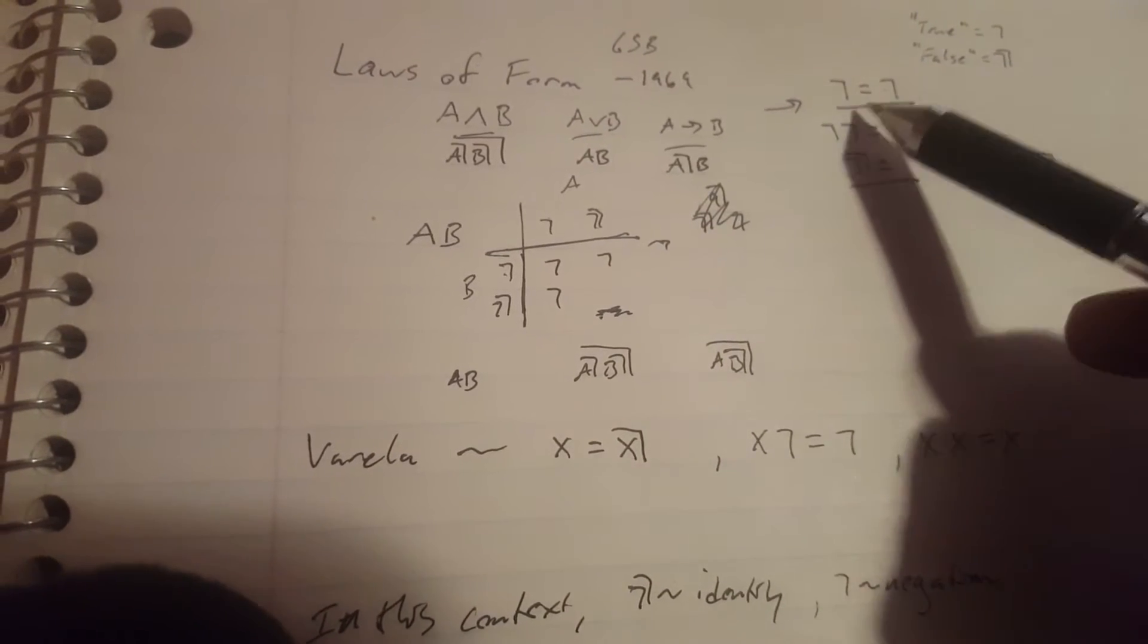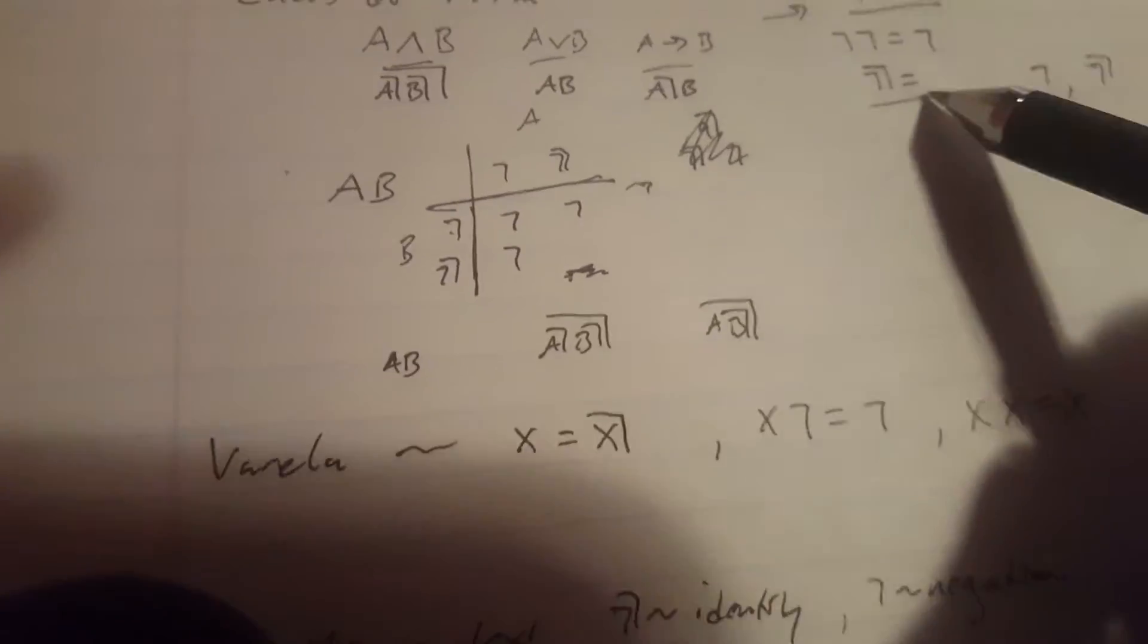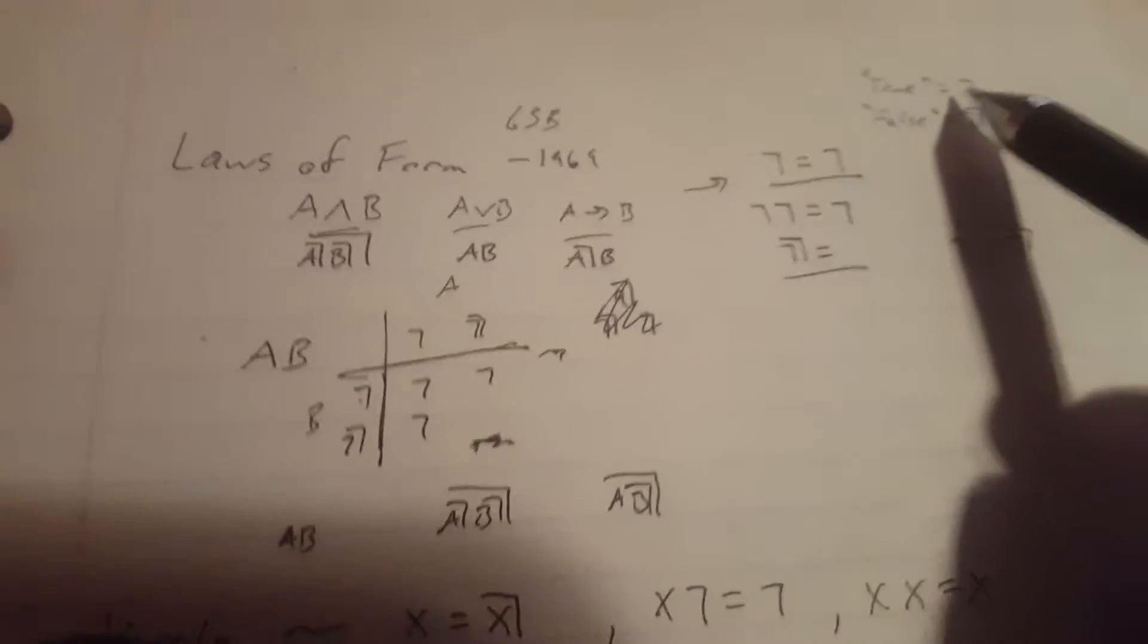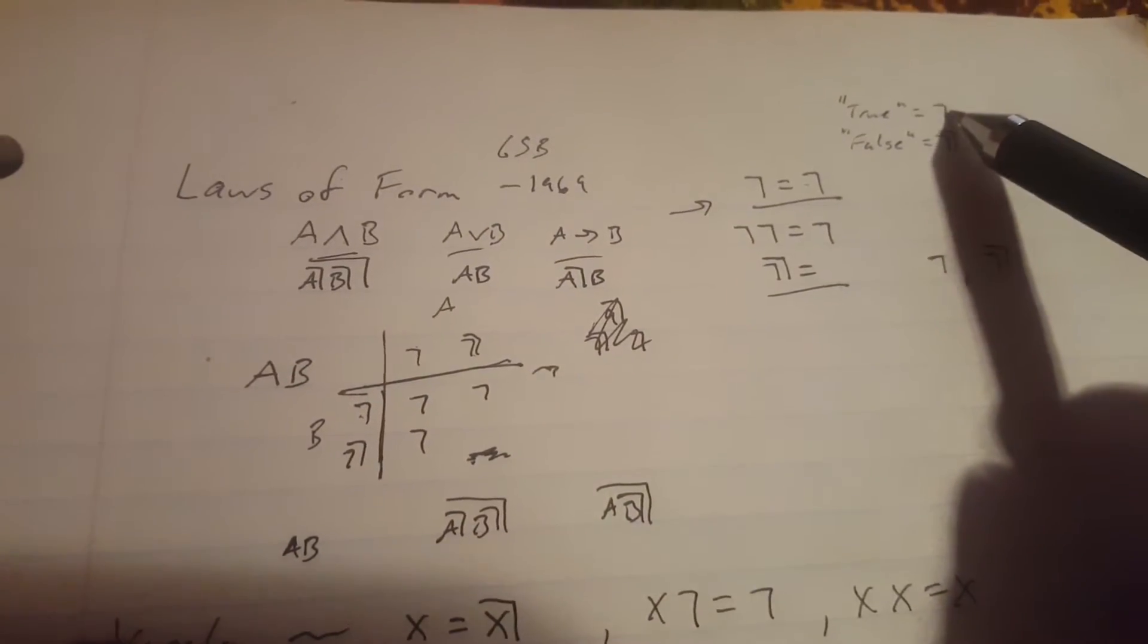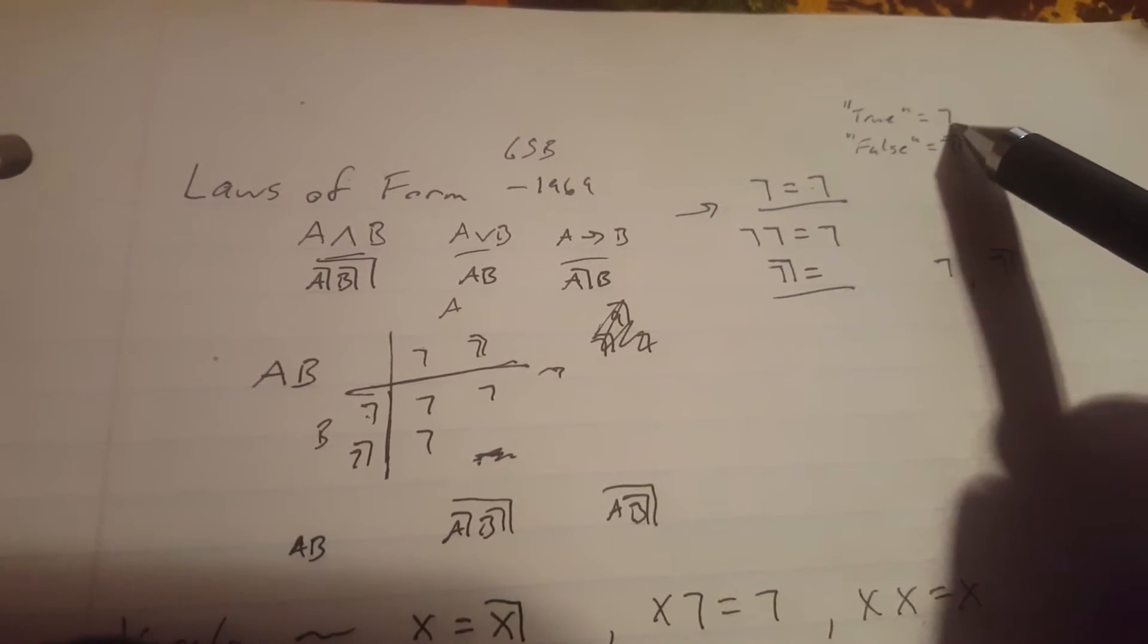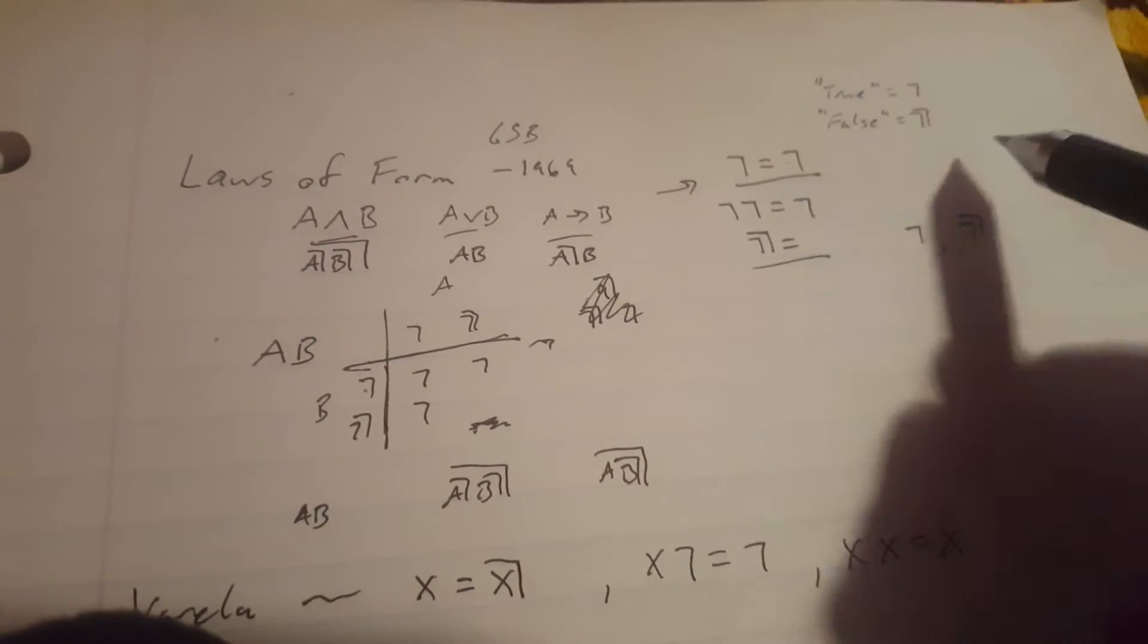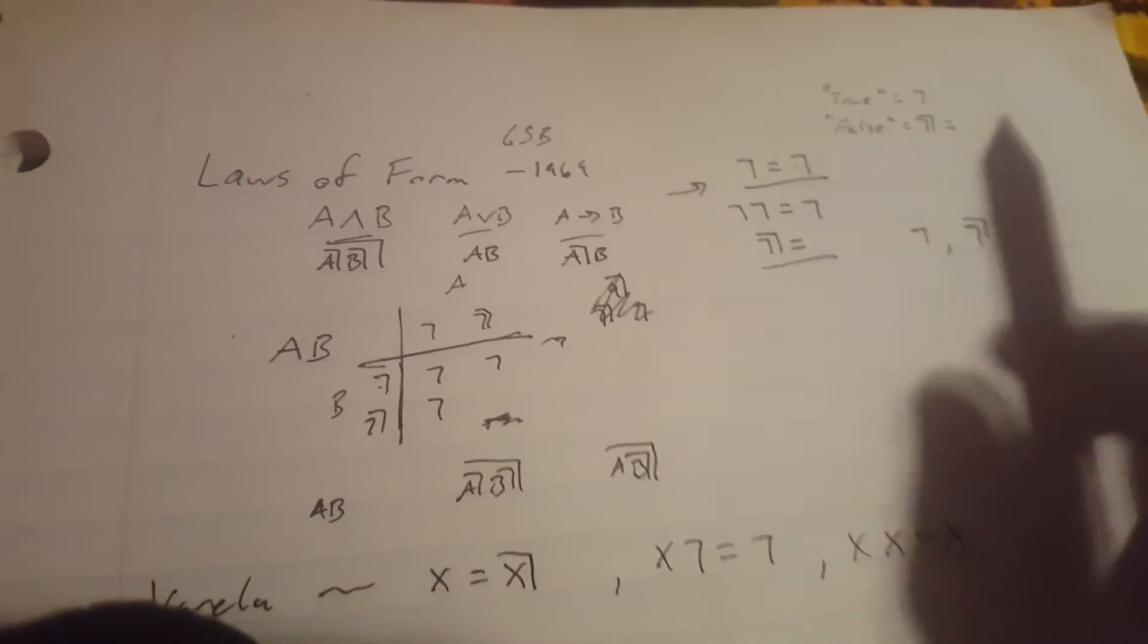So in addition to defining a mark, he defined the marked mark, or unmarked as it were. And this gives you this basic binary logic, right? So the way he set it up, he assumed that the marked state was true and that the doubly marked or unmarked state is false, and developed all of his logic from there.